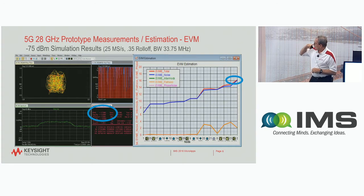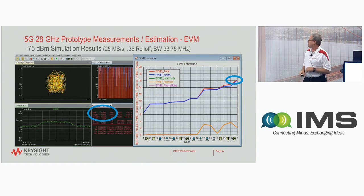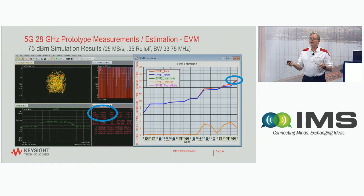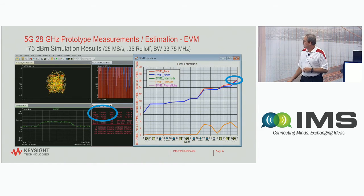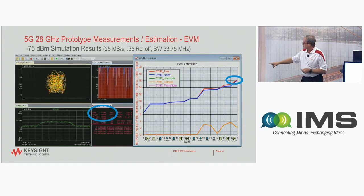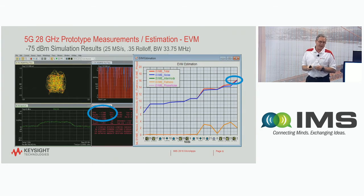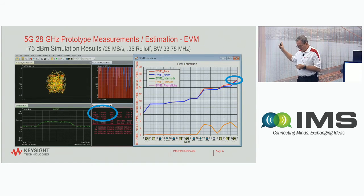Now let's go a little bit lower in power. We've dropped this by 25 dB — we're down at minus 75 dBm. As you would expect, the noise dominates the EVM, and that's what the blue line is. The red line is again the total, and the channel flatness is still the channel flatness. The measured results — the blue circle — show 17.9% EVM, and the estimated is 16.3%. So once again, pretty close.